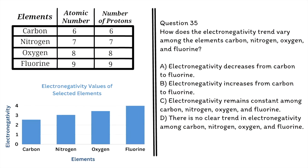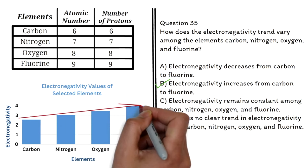Question 35: How does the electronegativity trend vary among the elements carbon, nitrogen, oxygen, and fluorine? A. Electronegativity decreases from carbon to fluorine. B. Electronegativity increases from carbon to fluorine. C. Electronegativity remains constant. D. There is no clear trend. The correct answer is B. We can see from the graph that the electronegativity values are increasing as you move from carbon to fluorine.